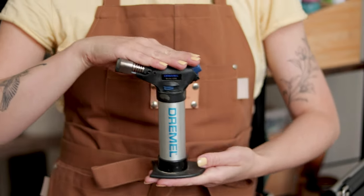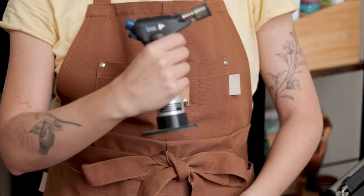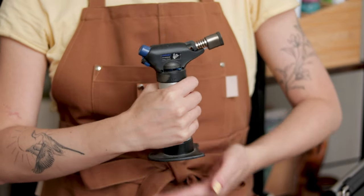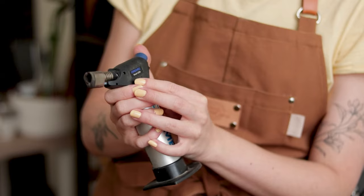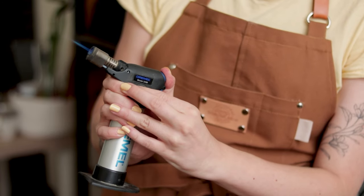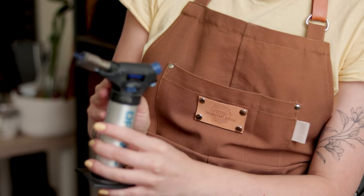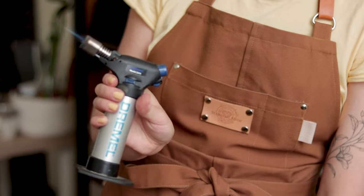My very first torch was this one by Dremel. This torch, like all the others, are butane torches which you will fill up with butane gas. I have a video on how to do it linked in the description box below.